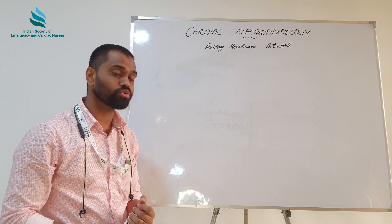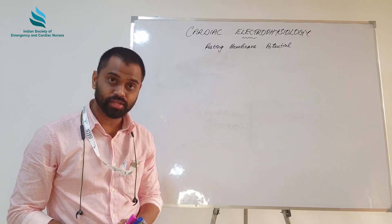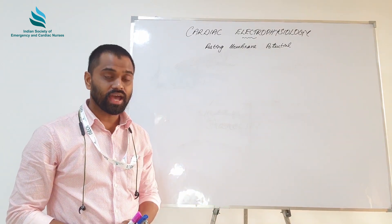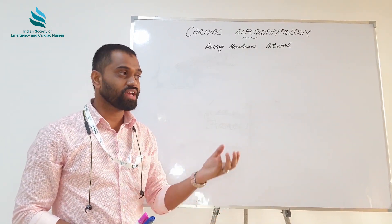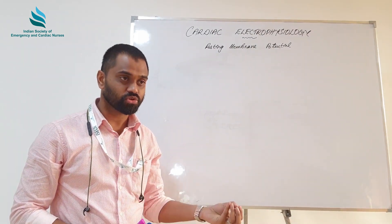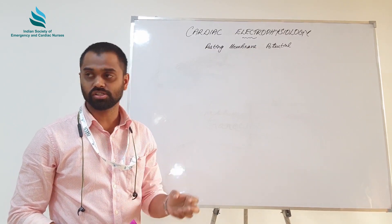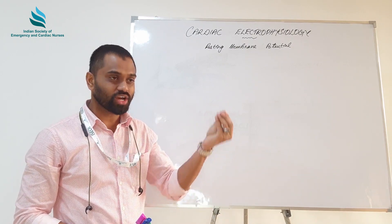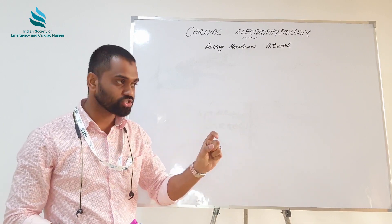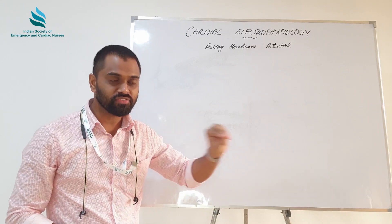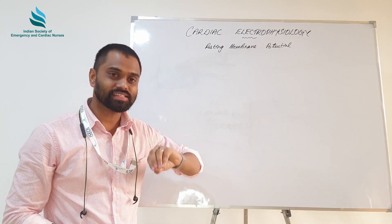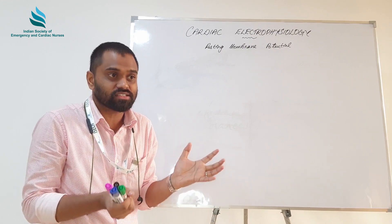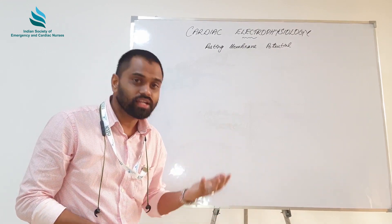To recap: myocardial cells are of two types — specialized myocardium, which includes the SA node, AV node, and Purkinje cells, and contractile myocardium, which includes atrial and ventricular myocardium. We also discussed electrical syncytium, where gap junctions between myocardial cells allow cations to move freely, enabling one cell to excite adjacent cells so they act together as a single unit.